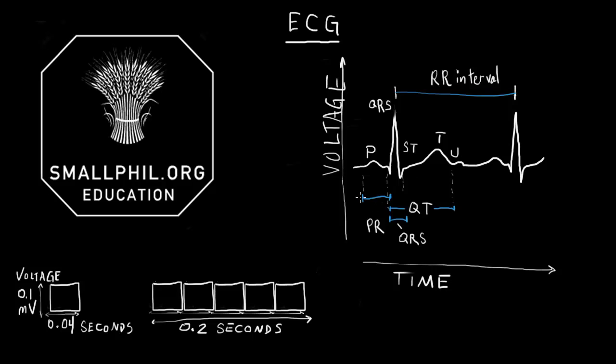It doesn't matter. The PR interval here to here is the time between the onset of atrial depolarization, the P wave, to the onset of the QRS, which is, of course, ventricular depolarization.